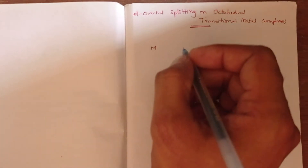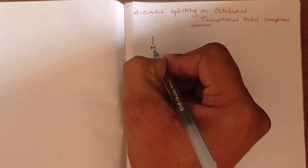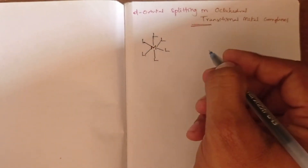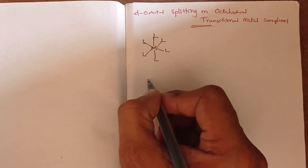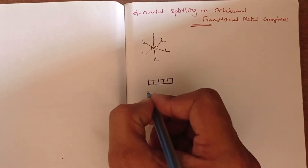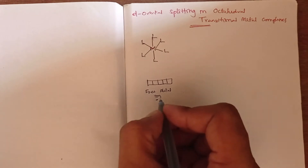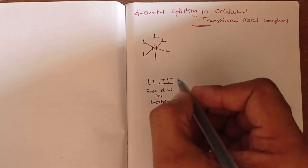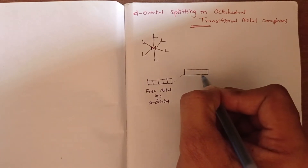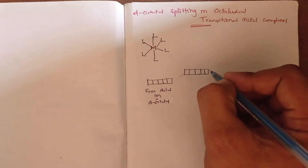In the last video we discussed the d-orbital splitting pattern in octahedral transition metal complexes — the ML6 octahedral complex. It undergoes d-orbital splitting; the five degenerate d-orbitals in a free metal ion, when six ligands surround the metal ion during complexation, initially get excited.